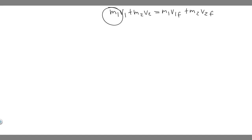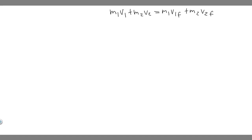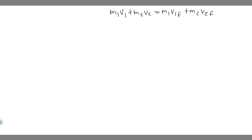This is your first formula. Since there are going to be two unknown variables, you need two different formulas. The other formula is V1 minus V2 is equal to minus V1 final minus V2 final.